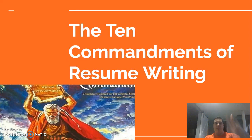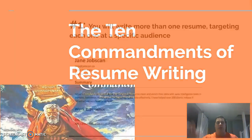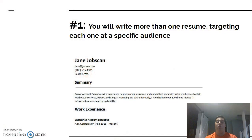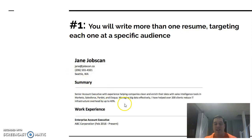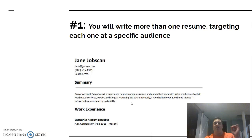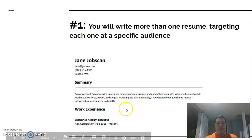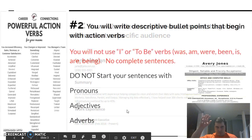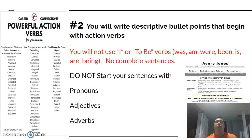That's Moses throwing down the Ten Commandments — Charlton Heston in the movie. Commandment one: you will write more than one resume, targeting each one at a specific audience. If you're applying to more than one job, you'll have multiple resumes, or at least the summary section will be different because you're tailoring it to the specific job you want. Here's an example of someone targeting the job of Senior Account Executive.